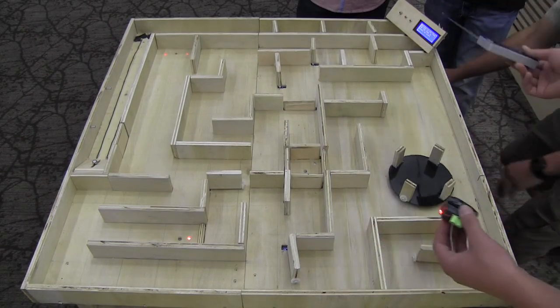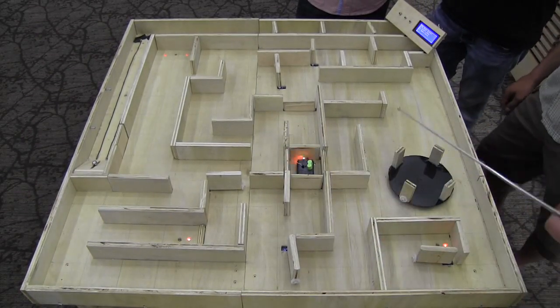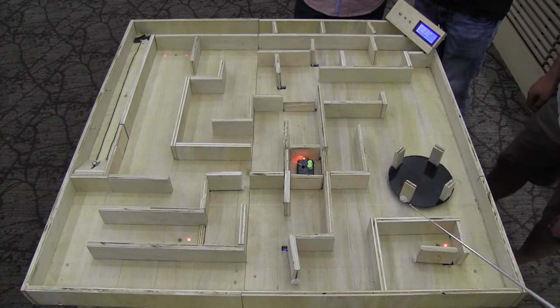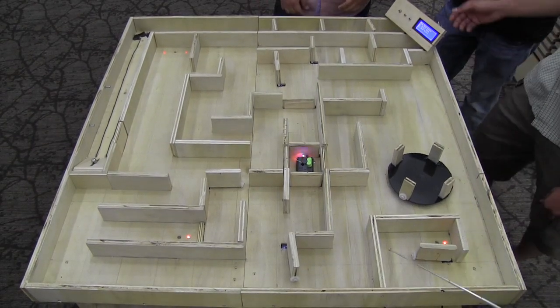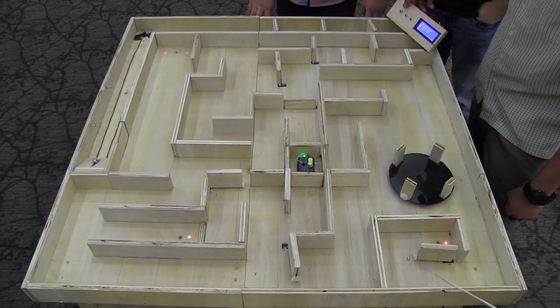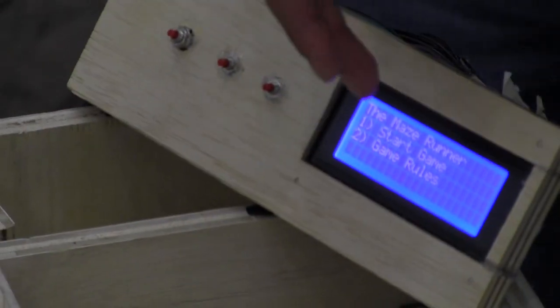All right, so there it's indicating you to put it in the square. It'll sense that and trigger a new LCD display. So there's a couple button options. Press button number one to start the game. Press button number two for the game rules.